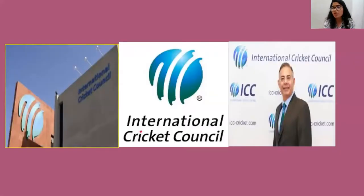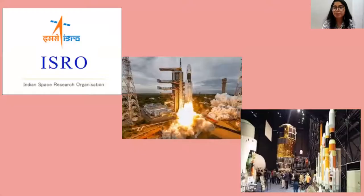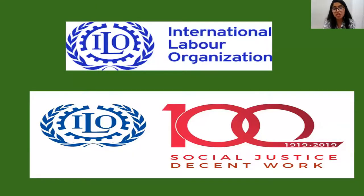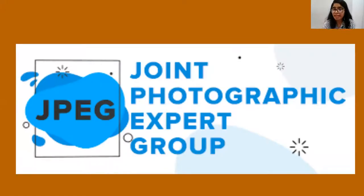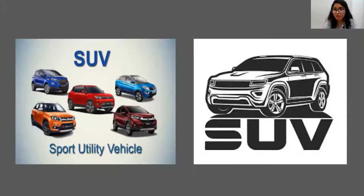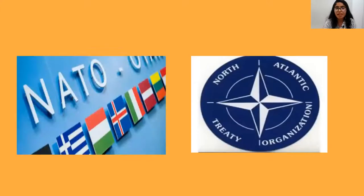Then we have ICC. I think you all would be aware of it — International Cricket Council. Then we have ISRO. You can see the beautiful pictures showing and reflecting what all has been done in ISRO, which is Indian Space Research Organization. Then we have NASA, National Aeronautics and Space Administration. Then we have ILO, which is International Labour Organization. Then we have JPEG, which is Joint Photographic Expert Group. Then we have this Pen Drive, which is also known as USB, Universal Serial Bus. Then we have SUV, which is Sport Utility Vehicle. Then we have NATO, which is North Atlantic Treaty Organization.